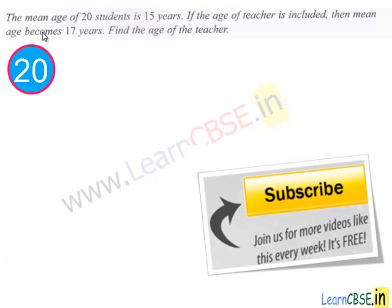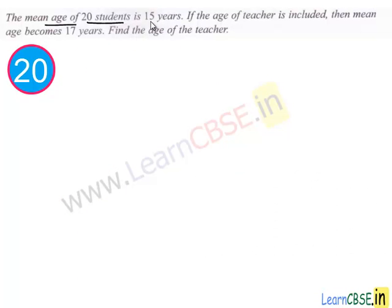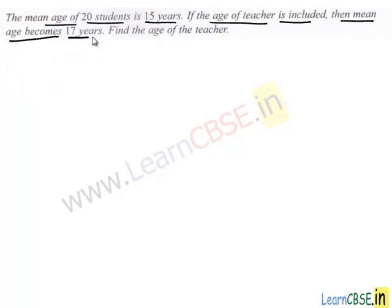Let's move to the next question. In this question, mean age of 20 students is 15 years. If the age of teacher is included, then the mean age becomes 17 years. We have to find out the age of teacher. Let's work out the problem.